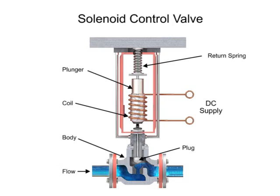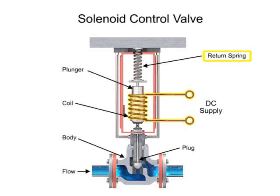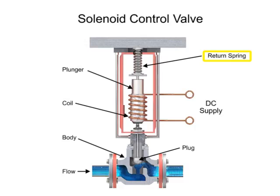For on-off control of the valve, a solenoid is used to actuate the valve to a fully closed or fully open position. Applying current to the coil generates a magnetic field that moves the plunger downward against the return spring. With zero current applied to the coil, the spring pulls the plunger upwards to the fully open position for a normally open state control valve.